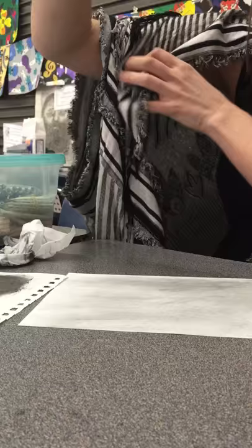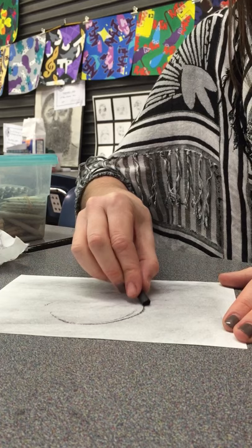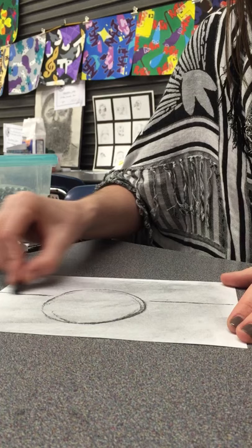The next thing you do is you take the charcoal and you're gonna draw the basic shape. So you're gonna draw a little sphere, a little circle, just like we did with the ones in colored pencil and give it a table line and then decide what direction your light's coming from. So I decided mine's gonna come from that way.